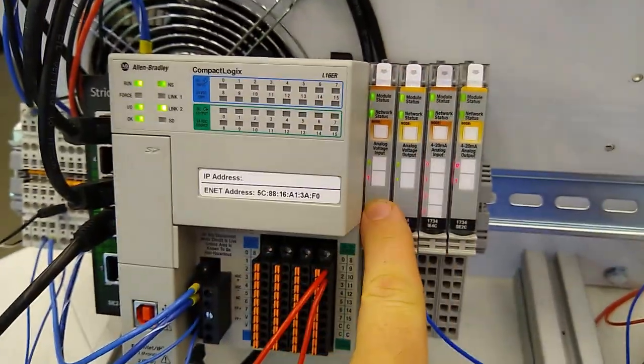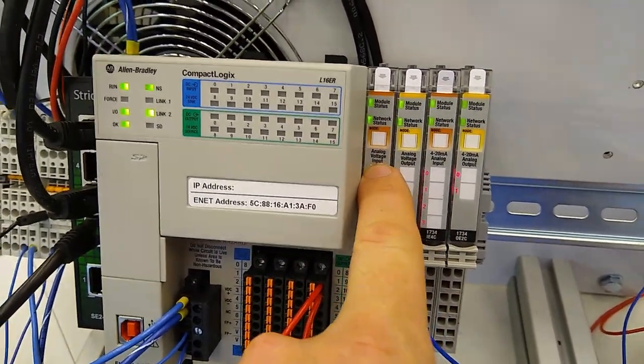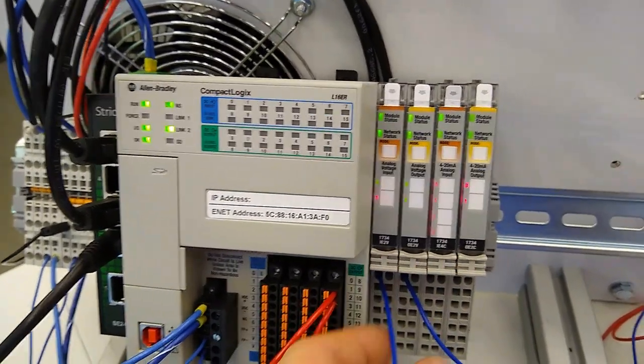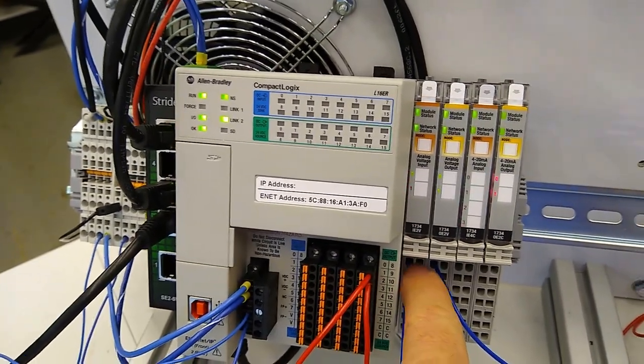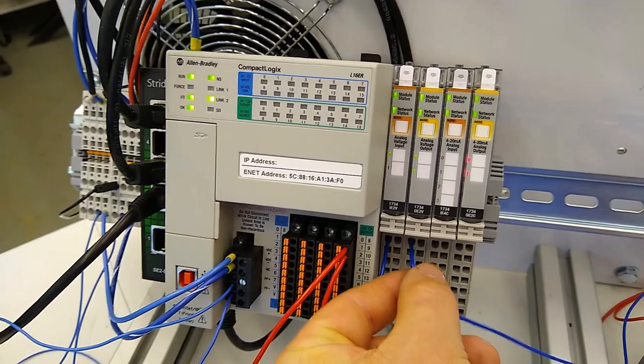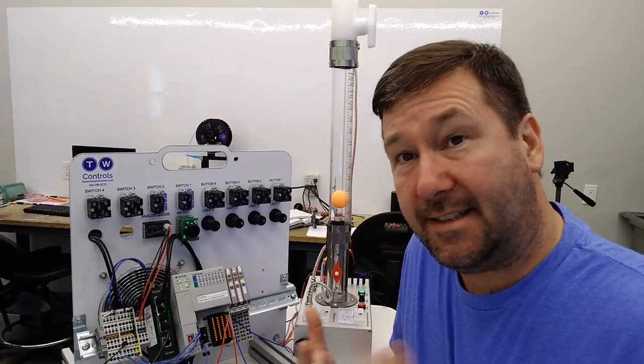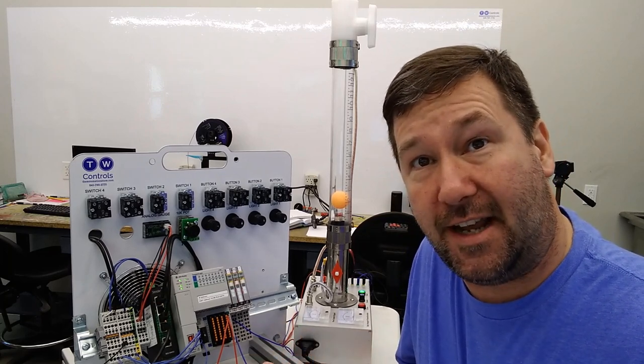And those are going to go over to our analog modules here and this one is a voltage input module and this is a voltage output. That's the two we are going to use. And our analog prox plus is going to analog input zero and our fan speed command is coming from analog output zero. And that's all it's going to take to interface these two trainers. That's why this was such a natural fit.